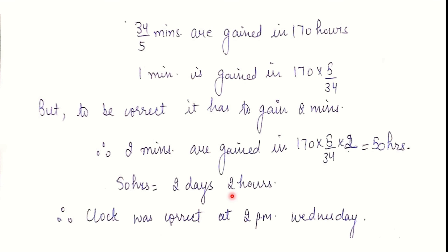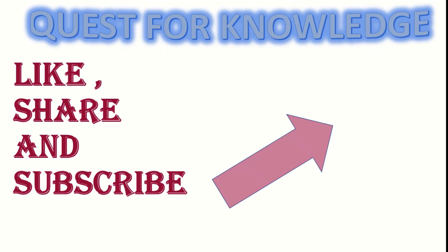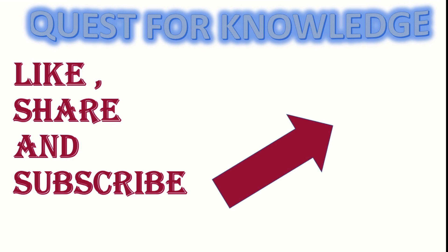Converting 50 hours into days: 50 hours equals 2 days and 2 hours. Starting from 12 PM Monday, 2 days forward is Wednesday, and 2 more hours brings us to 2 PM Wednesday. So within this week the watch was correct at 2 PM on Wednesday. If you liked the video and understood the concepts, please like, share, and subscribe the channel. Thank you.